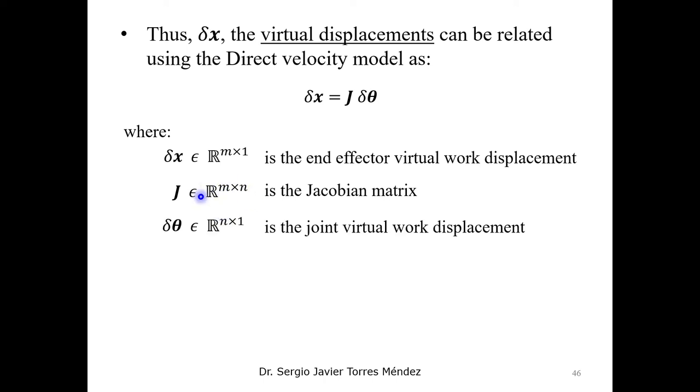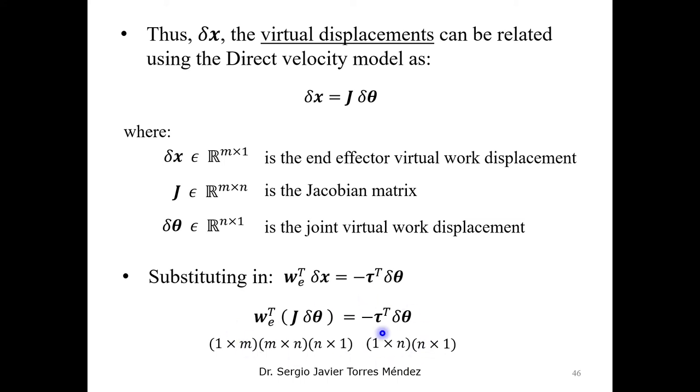In general form, the Jacobian could be a non-square matrix. Now, let's recall our virtual work formulation and then substitute this virtual displacement in these equations. And then we obtain this mathematical relationship using our dimensions of this matrix.